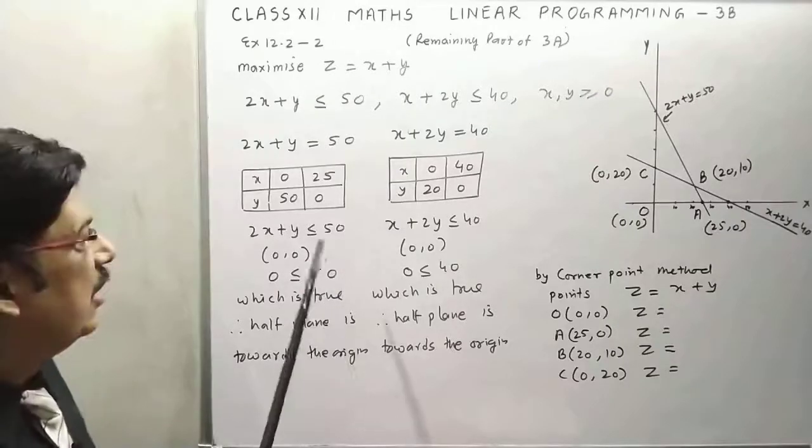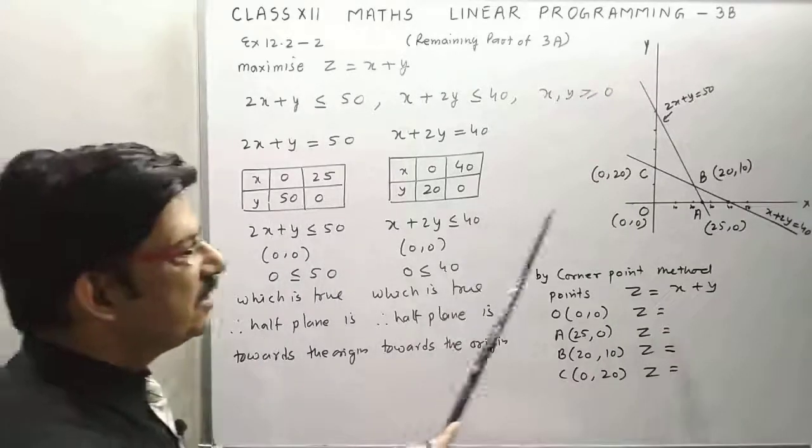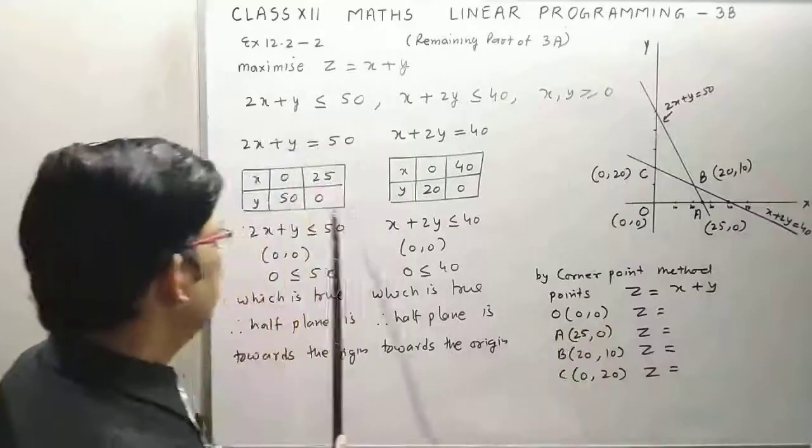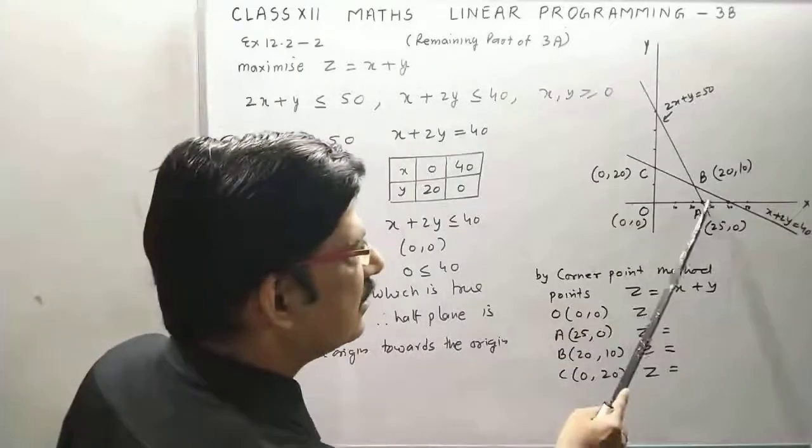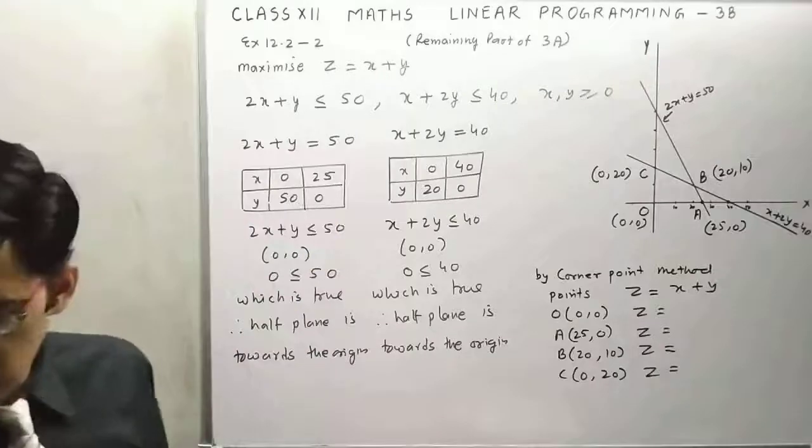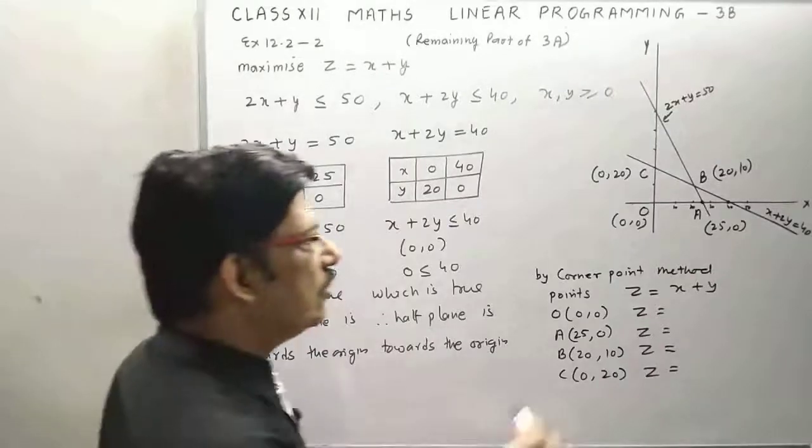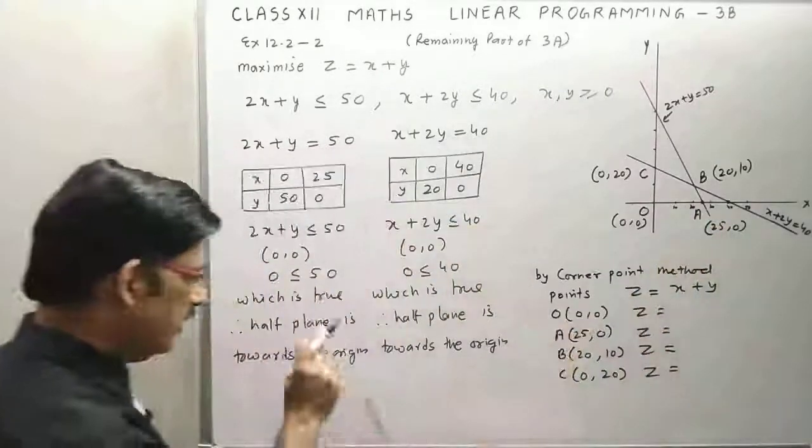Now you can draw this: 0,50 means this point is (0,50) and 25 comma 0 is this. Just join these two points. Now we have to draw the graph towards the origin because the condition is true.